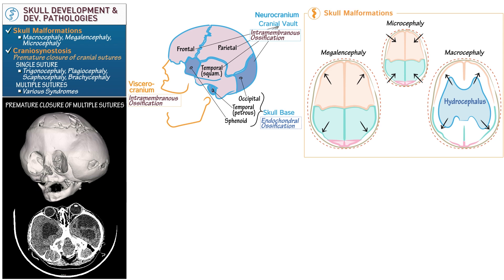The key viscerocranial bones include the zygomatic bone, maxilla, and mandible, which develop via intramembranous ossification. The bones of the face derive from embryonic cells from the pharyngeal arches — specifically from neural crest cells — other than the laryngeal cartilages, which derive from the mesoderm.